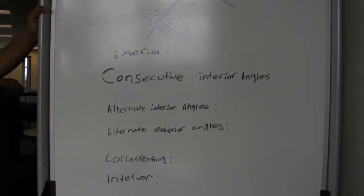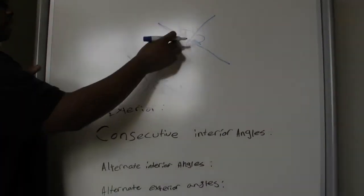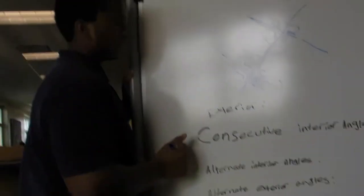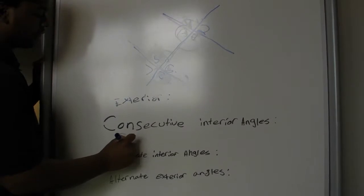Oh no, I don't remember what consecutive interior angles are. Consecutive interior angles are two angles that are on the same side and on the inside. For example, three and five are consecutive interior angles.